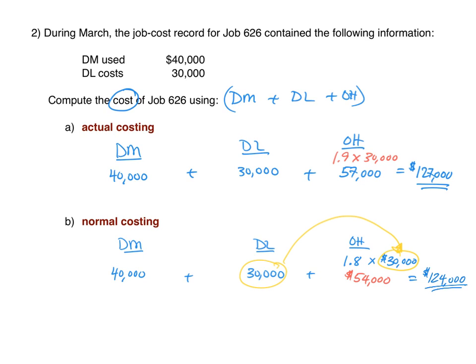We might ask ourselves why we use budgeted information at all. The answer is that we would only really know actual overhead numbers at year end, once all jobs are completed. We can't wait until that time to apply costs to individual jobs throughout the year. That's why we use normal costing.